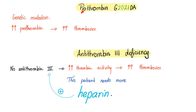Prothrombin G20210A: genetic mutation causing increased prothrombin, which leads to more thrombosis. Antithrombin 3 deficiency: deficiency of antithrombin means thrombin is left uninhibited and unchecked, leading to increased risk of thrombosis. This patient will need more heparin — because the mechanism of action of heparin is to stimulate antithrombin 3, and this patient has no antithrombin 3 or very little, so we need to give more heparin.